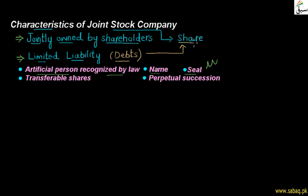The shareholders take shares, and by taking those shares, they become the owners of the company. Now, the shareholders who take shares have the option that they can transfer their shares. If they want to remain owner of the company or want to transfer some shares, the joint stock company shareholders have this option that they can transfer their shares.